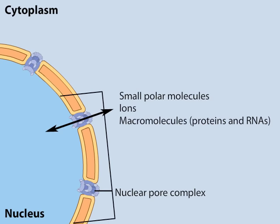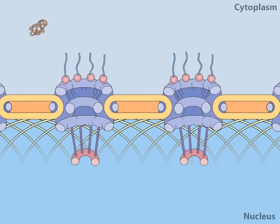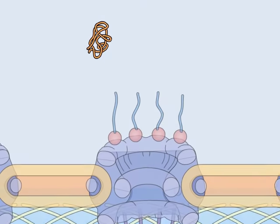Most proteins and RNAs are too large to move through the complex by passive diffusion and must move by an active process in which appropriate proteins and RNAs are recognized and selectively transported in a specific direction.